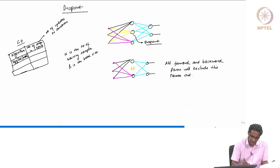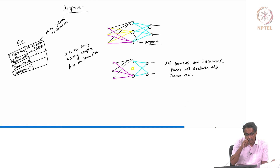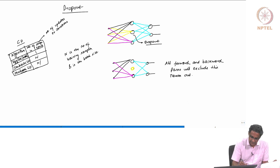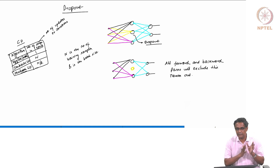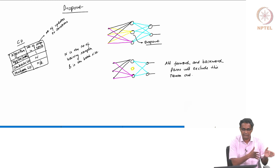First is vanilla GD, or batch gradient descent. Next is stochastic GD, and third is mini-batch GD. The number of steps in one epoch: vanilla GD is 1, stochastic GD is N, and mini-batch GD is N divided by B. So from now on, remember that when we say a mini-batch, it means all updates are happening within the epoch, during the iteration itself.